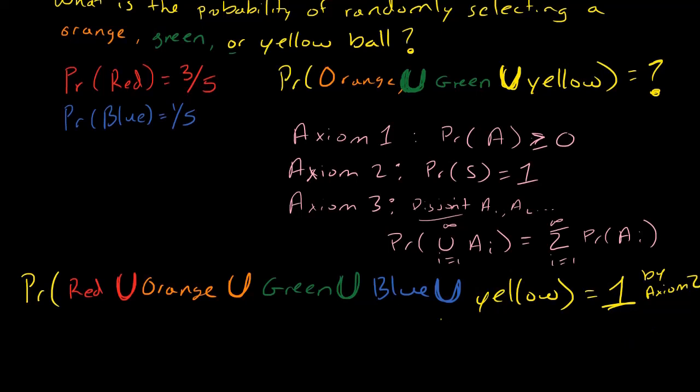So once you've figured this out, now I can use axiom 3 to break this union up into a sum. This is equal to the probability of getting red. Notice that these are disjoint events, because a ball is either red, or orange, or green, or blue. It can't be both colors or more than one color at a time. So since these are disjoint events, this is equal to the sum.